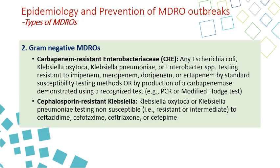For gram-negatives, we have several ones. The first is CRE, or carbapenem-resistant Enterobacteriaceae — E. coli, Klebsiella, Klebsiella pneumoniae, or Enterobacteriaceae species testing resistant to one of the carbapenems, including imipenem, meropenem, doripenem, or ertapenem by standard susceptibility methods, or finding carbapenemase-producing organisms using special testing like PCR or modified Hodge test.